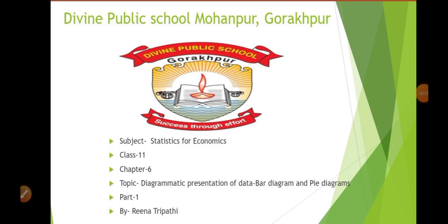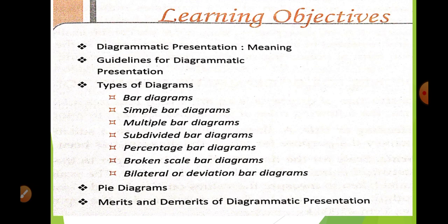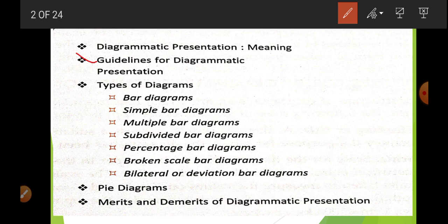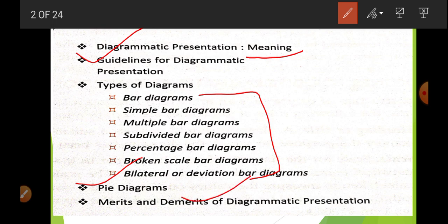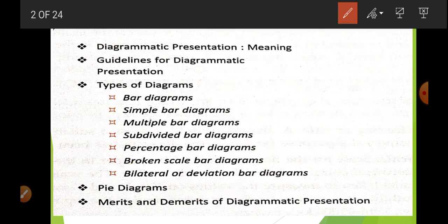Hello Class 11th students. Today I'm going to start Chapter 6, topic is Diagrammatic Presentation of Data. Within that we are going to learn bar diagram and pi diagram - this is Part 1. In this chapter we are going to cover these following topics: diagrammatic presentation its meaning, one-dimensional diagrams, pi diagram, and the merits and demerits of bar diagram.